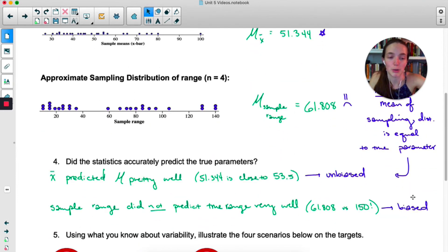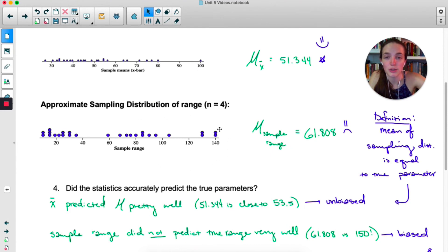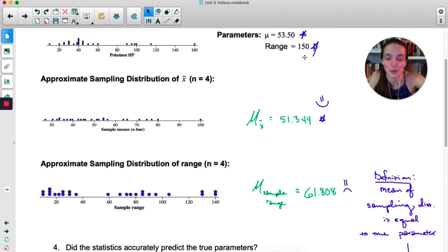Now the sample range is what we would call a biased estimator, because it is consistently too low or too high. In this case, we can see that it is consistently too low. In fact, I didn't get any with the true range of 150. Maybe you have some by the time you've done this, but for me, I didn't even get the true range. And it makes sense that this would always be below 150, because it's literally impossible for me to take a sample of 4 and get a range that's bigger than 150. Most of the time I'm going to get very small ranges because most of those Pokémon had really small HP values and there were a couple big outliers.